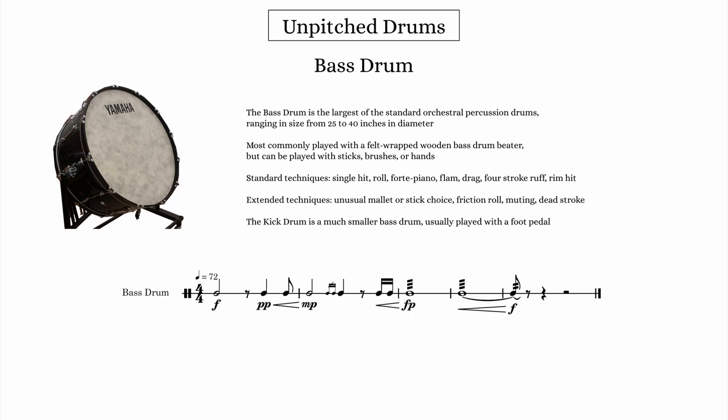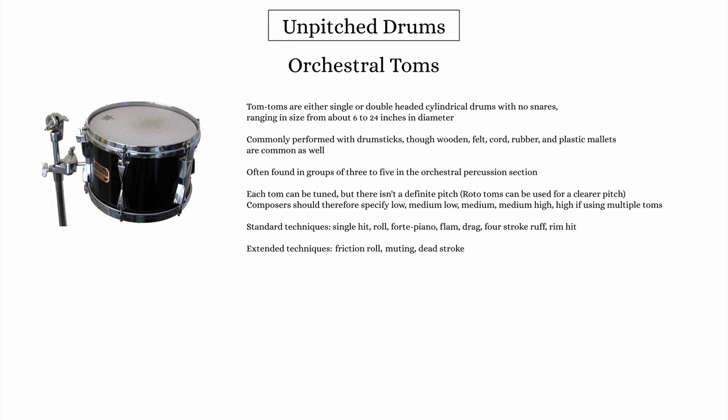Another common unpitched drum is the tom tom, which comes in many sizes and tunings from low to high. Composers can write for a single tom or a grouping of up to five differently tuned toms. These cylindrical, snareless drums typically range from 6 to about 20 inches in diameter, with floor toms as large as 24 inches. The tunings can be slightly adjusted, but it's best not to ask for a specific pitch — instead, use terms like low, medium, medium-high, and high. When notating music for a group of toms, I prefer to use a full staff and assign each tom, from low to high, either a line or space on the staff.